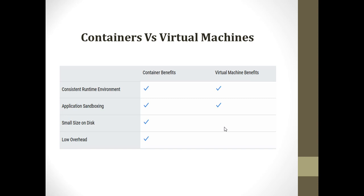Both containers and virtual machines are responsible for providing a consistent runtime environment as well as application sandboxing. But if you have very limited disk space, you would not be able to run a virtual machine — containers will still run well. Remember in our hands-on lab with VMware, when you had less disk space the platform would deny creating a virtual machine. Also, the low overhead advantage belongs to containers, whereas with virtual machines, overhead arises when installing multiple OS images on a physical machine.